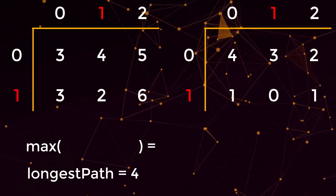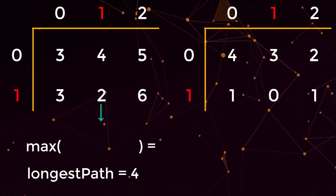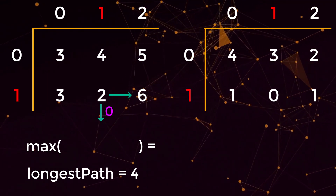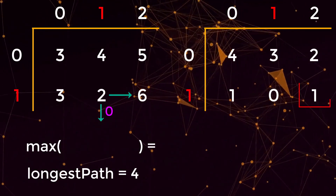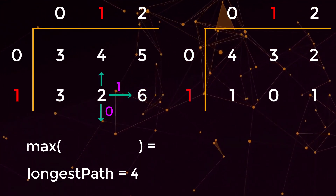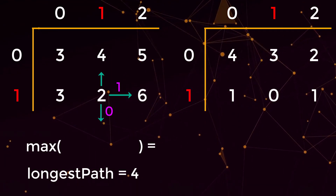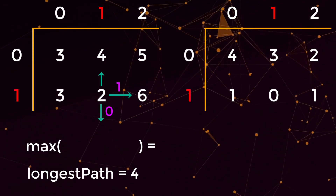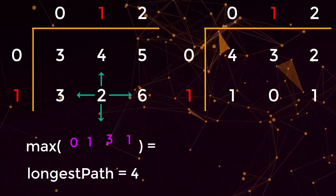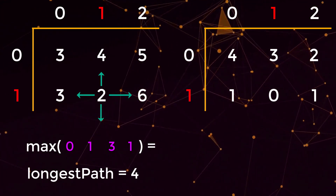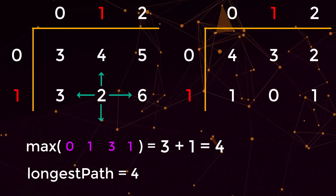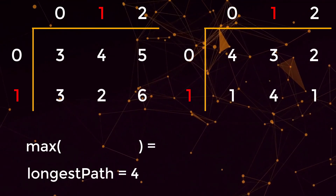Moving to position (1,1), cache value is zero so we visit it. Down is out of bounds — return zero. Right: six is greater than two, and we already have a cached value at (1,2) which is one, so we return one. Up: four is greater than two, and the cached value at (0,1) is three, so we return three. Left: three is greater than two, cached value at (1,0) is one. The maximum among one, three, one, and zero is three; plus one gives four. We update cache[(1,1)] = 4. Four is not greater than four, so we do nothing.